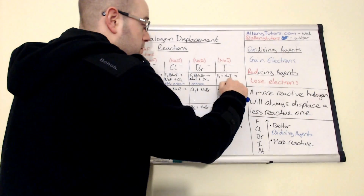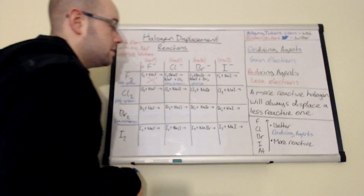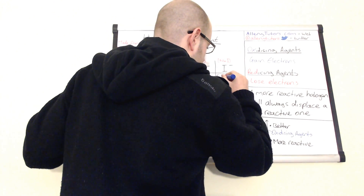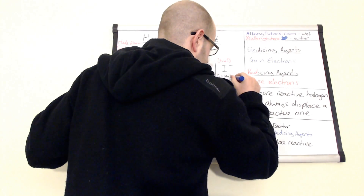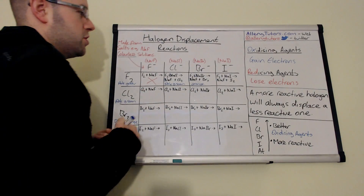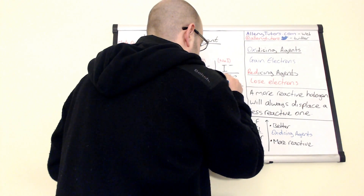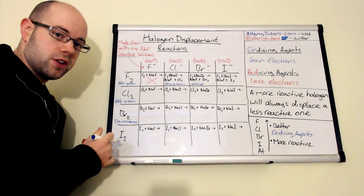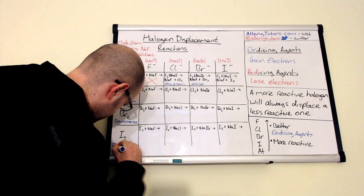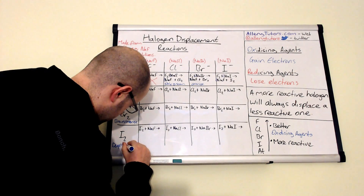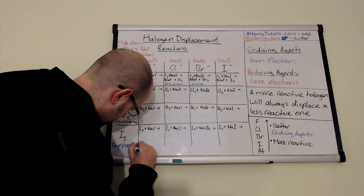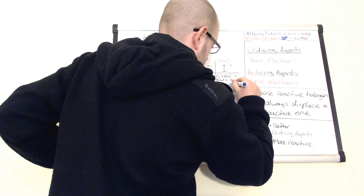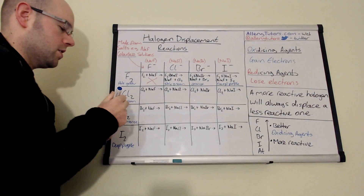Next: fluorine is more reactive than iodine, so we do get a reaction here. We form NaF plus I2. Balancing: put twos in the same places. What you'd see is iodine, which as a solution is a really deep purple colour — almost black, a really dark colour. So you do actually get a reaction here.